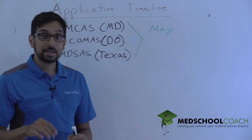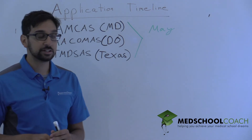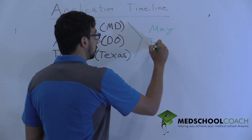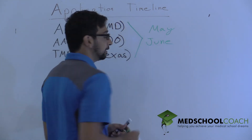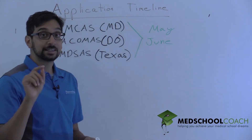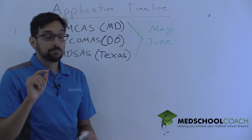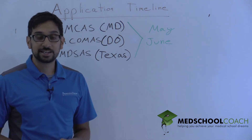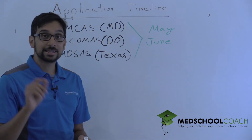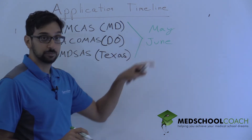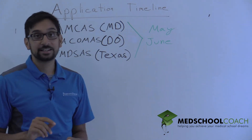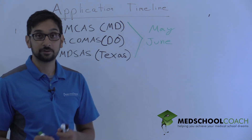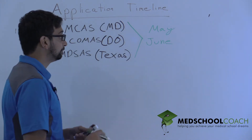Typically in early May the MD application opens up. The exact date varies from year to year. Then in early June you can actually physically hit the submit button. Between May and June it's all about putting your information in and getting your personal statement in there. The exact submit date varies — sometimes June 1st, sometimes June 3rd, sometimes May 31st — but that gives you the general idea.